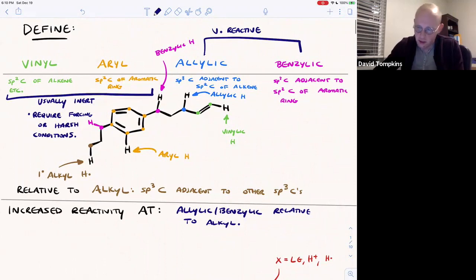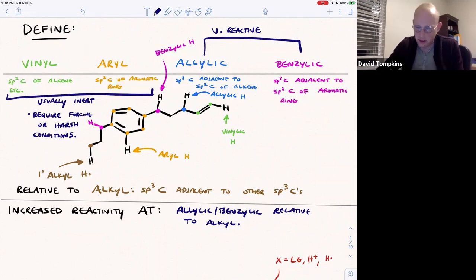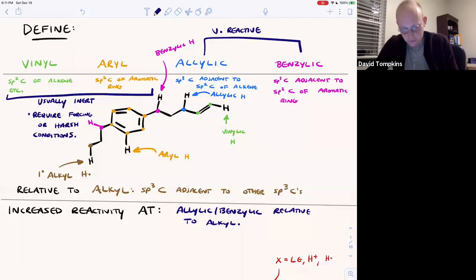But for now, you can simply be able to identify these carbons, identify their hydrogen types, and predict things like acidity and reactivity trends based on our current definitions of these systems. So for more practice with allylic and benzylic reactivity, you can visit either my Organic 1 or Organic 2 course guide. Both of those are available at chemguides.com.